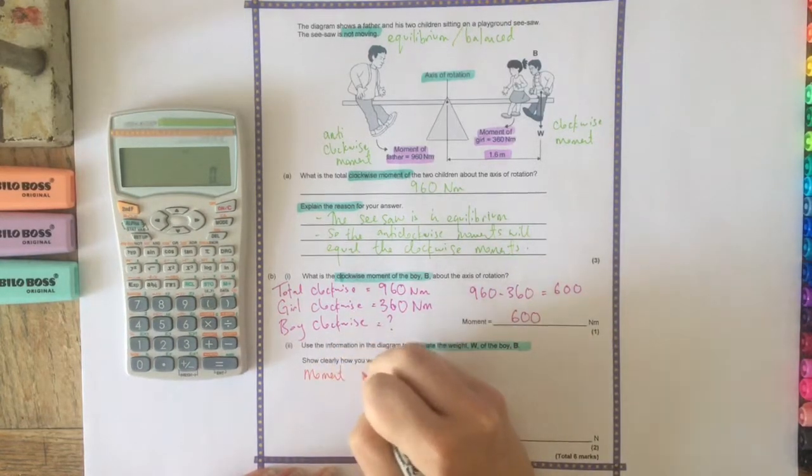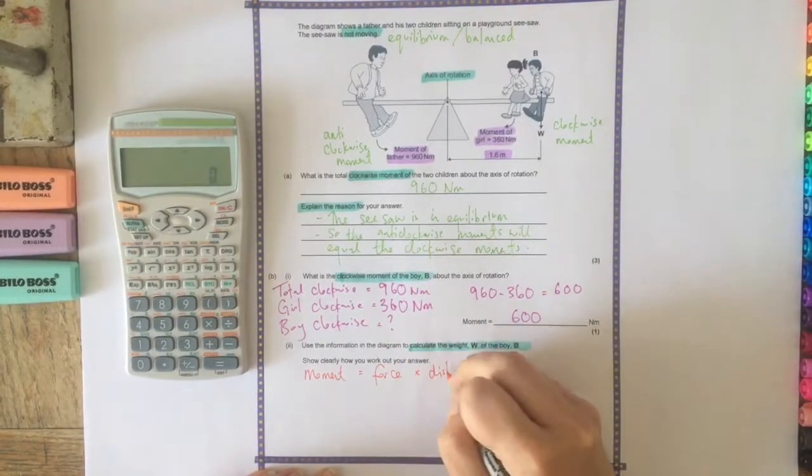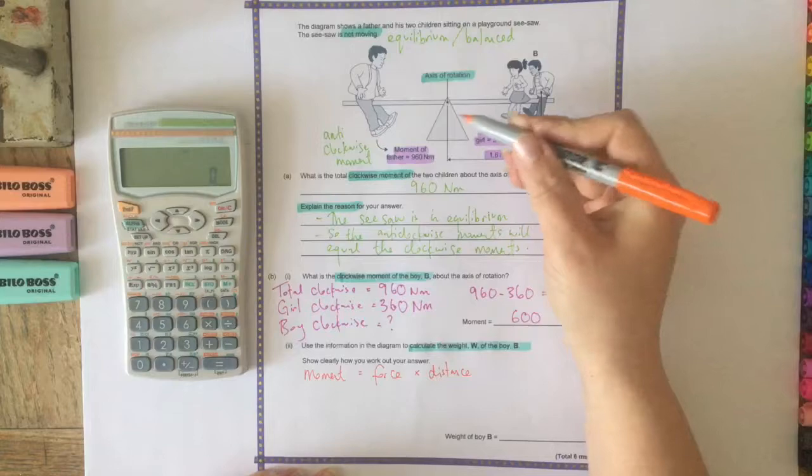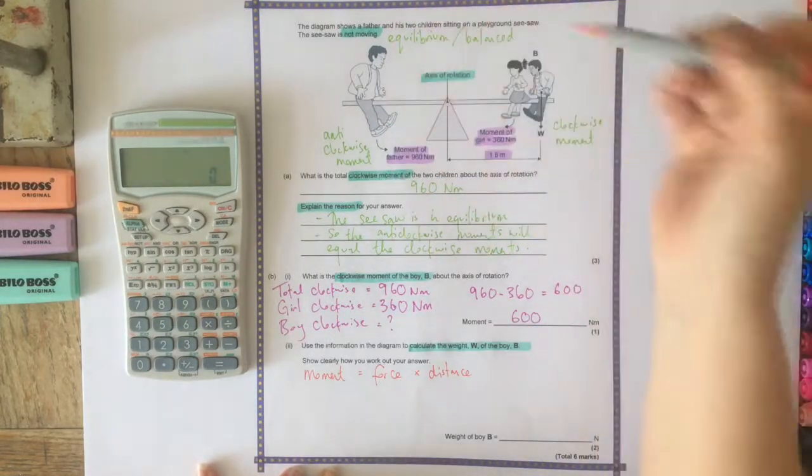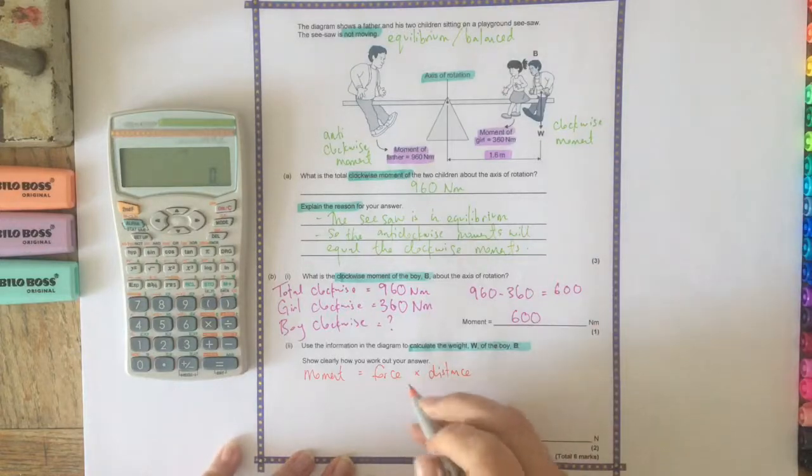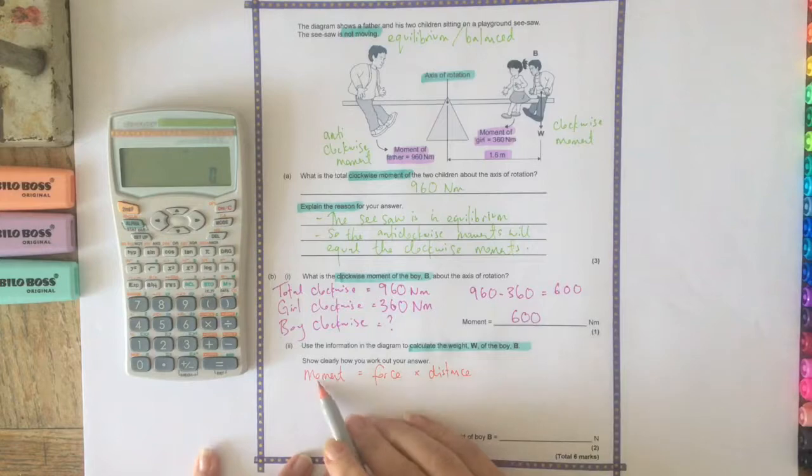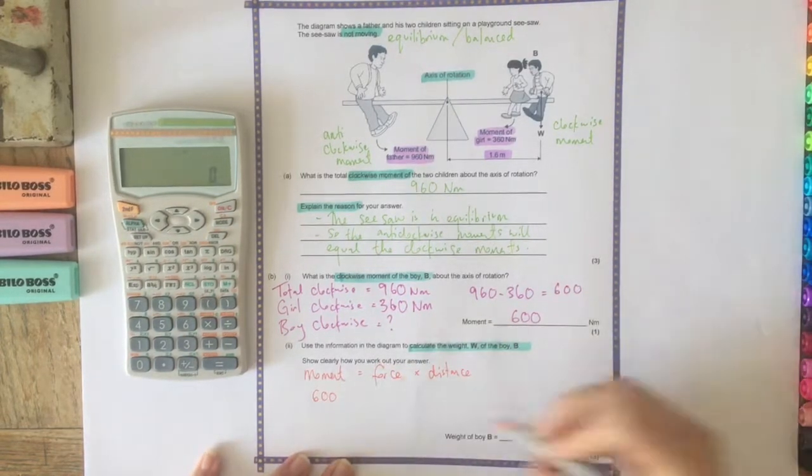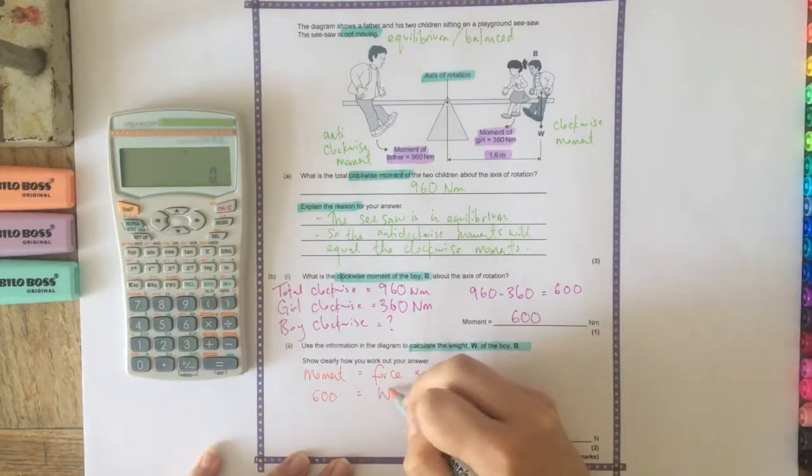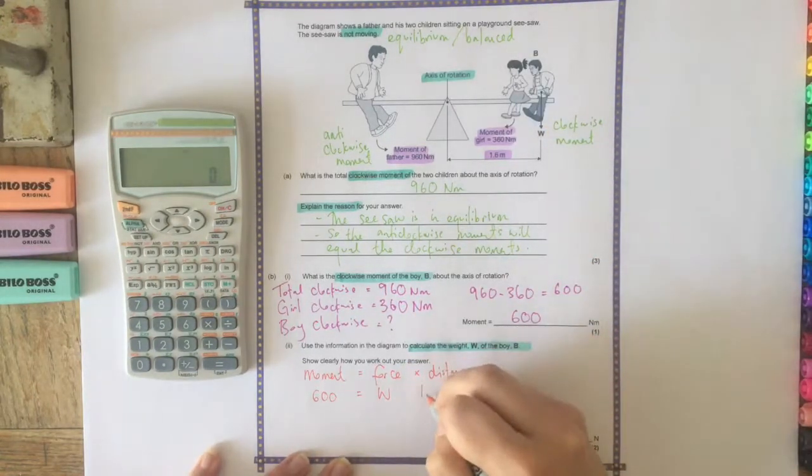So the first thing that we could do is think about what's our equation for moments. So to work out a moment, we do the force times the distance from the pivot. So it's the force that is at right angles to that plane. So this is his weight, and the distance is the distance from the pivot. We already know his moment because we've just calculated it. So we'll write that out here: 600. The force is W, which is what we want to find out. And the distance is 1.6.